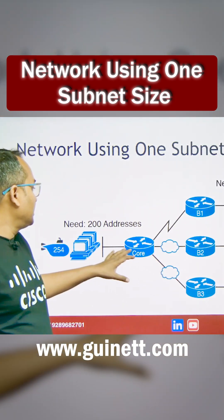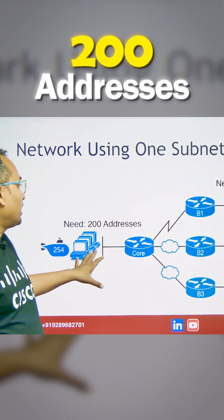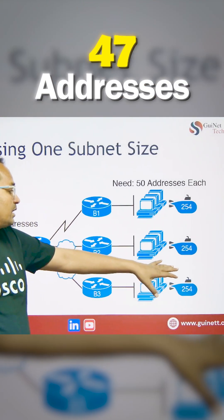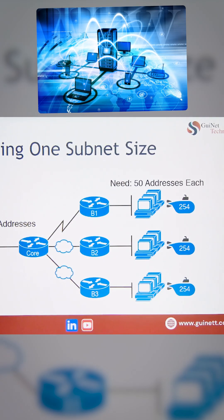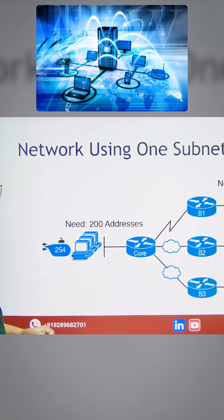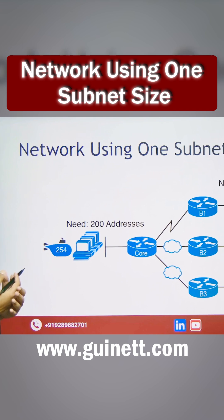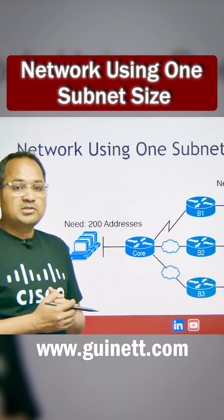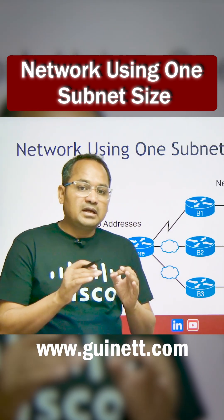This network is going to require 200 addresses here, and my 50 addresses are going to be required here. You can see these are the LAN PCs — they have the 50 address and these are the 200 network. So how can I use my IP schema? Like we discussed in classful and classless, we have to make our host bits on and off.